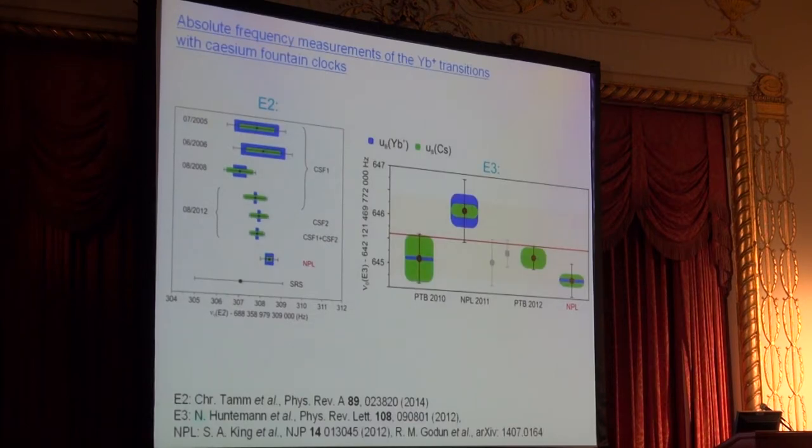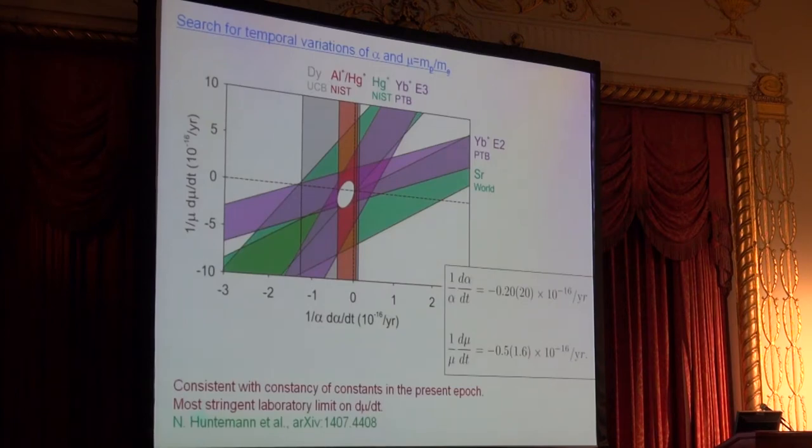Here I show you results of absolute frequency measurements we have performed on the two ytterbium frequencies—quadrupole and octupole—over quite some time. In the case of the quadrupole transition spanning several years already, you can see the consistency and improvements of these measurements. The final uncertainty of these absolute frequency measurements is dominantly determined by the uncertainty of the cesium clocks, and the measurements within themselves and also with the measurements done at NPL show good consistency.